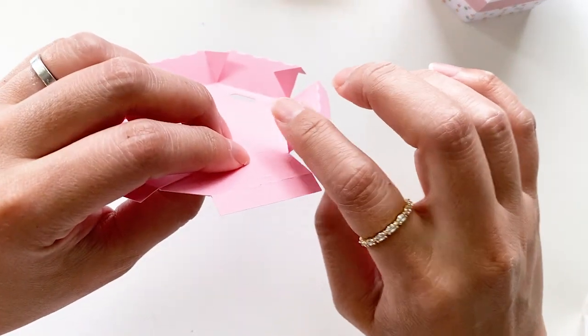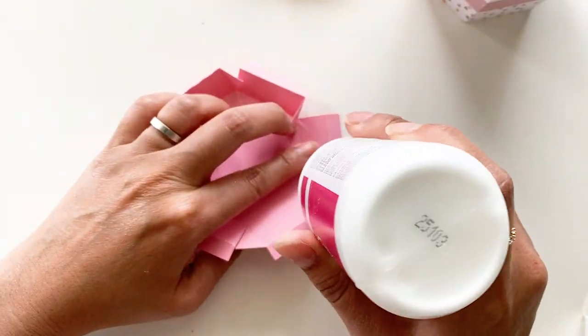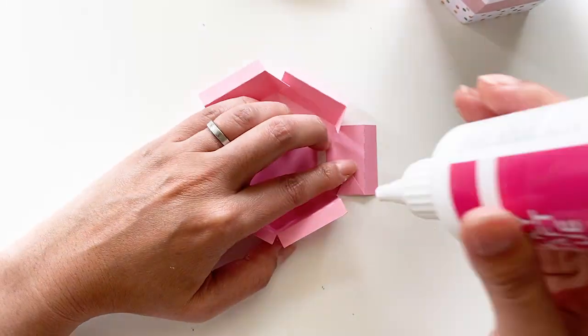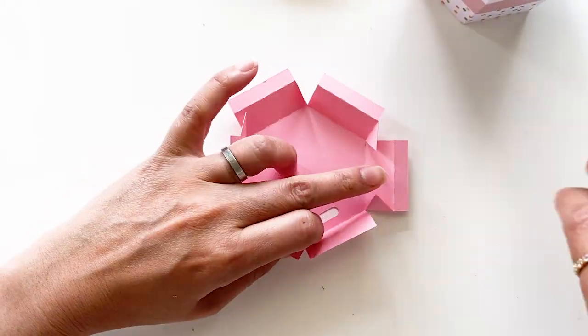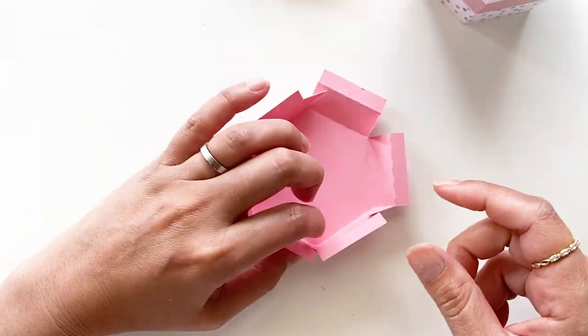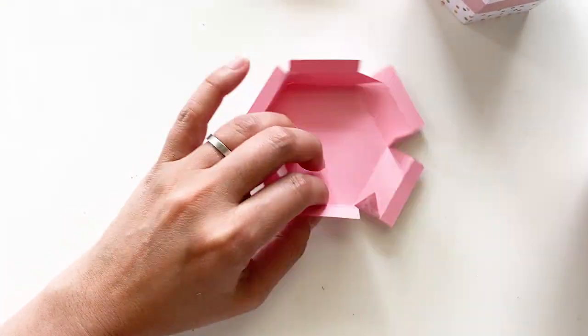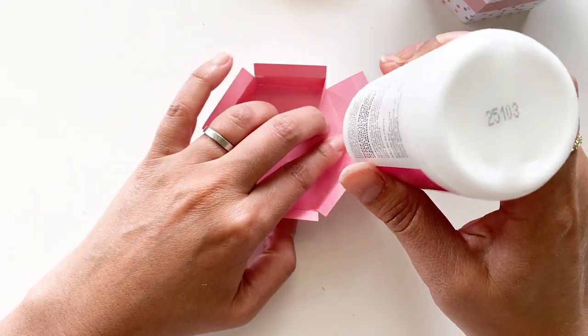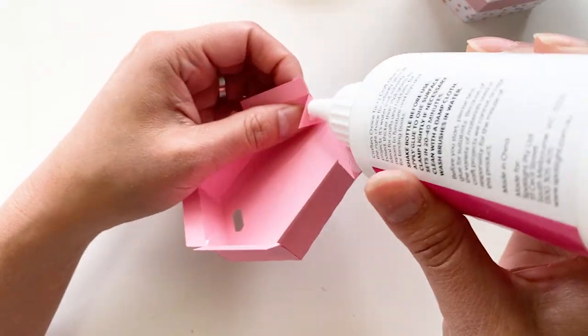Apply glue on the triangle tabs and glue them one by one. Glue the last two tabs at the same time. Otherwise, it might be tricky for the last one.